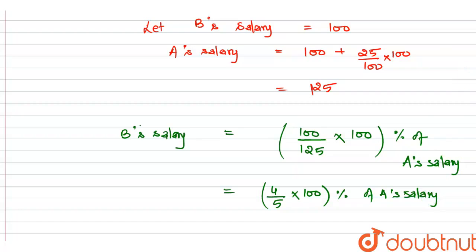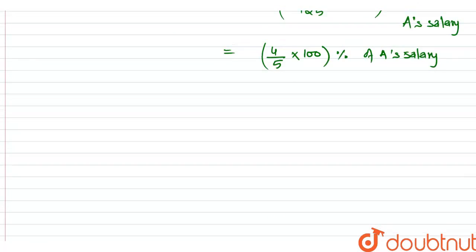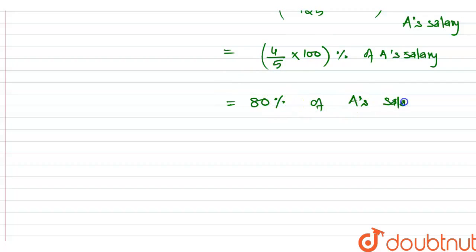Now we simplify: dividing 100 by 5 gives 20, and 20 multiplied by 4 gives 80. So B's salary is 80% of A's salary.